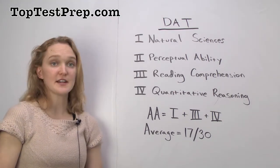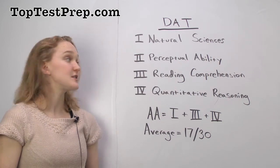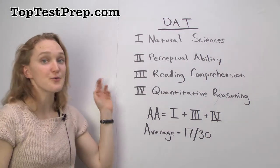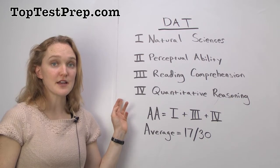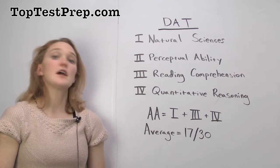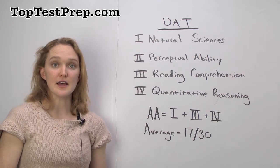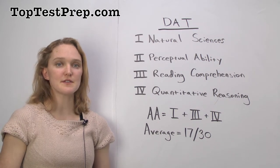Here I've abbreviated it as AA. And that considers your scores from natural sciences, reading comprehension, and quantitative reasoning. Now the ADA says that, like I said, the average on each section is about 17 out of 30.